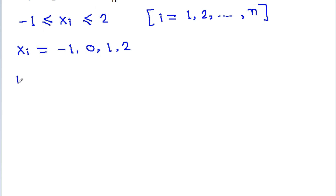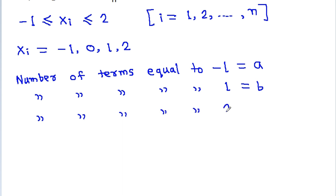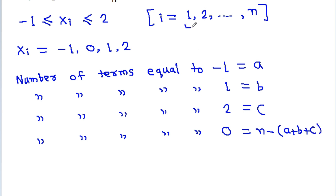Suppose the number of terms equal to -1 is a, the number of terms equal to 1 is b, and the number of terms equal to 2 is c. Then the number of terms equal to 0 will be n minus (a + b + c), because total terms are n and a, b, c must be greater than or equal to 0.